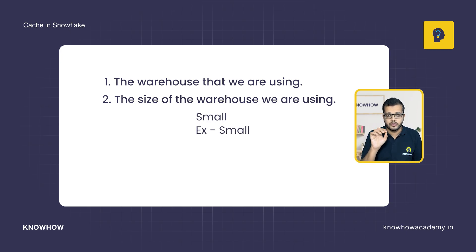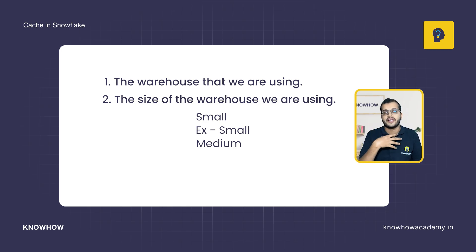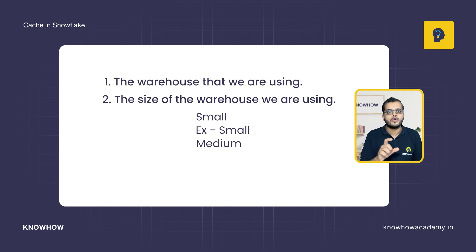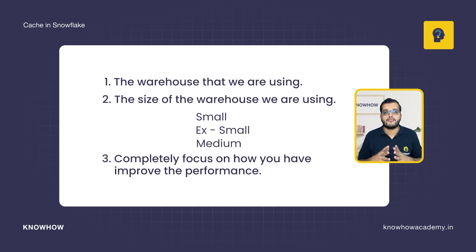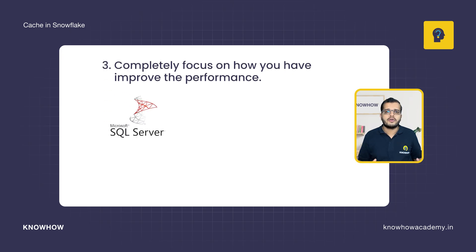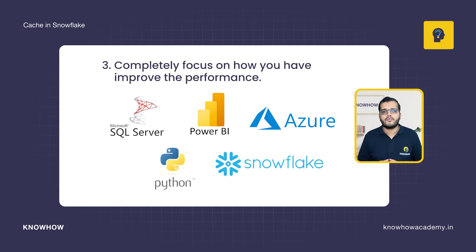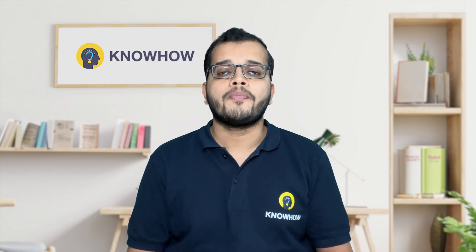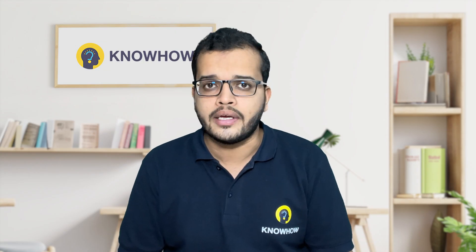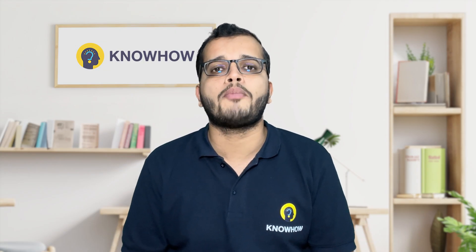Number two, the size of the warehouse — are we using X-Small, Small, Medium, or another size? That should depend on what kind of data and how much usage we need. Number three, we need to completely focus on how to improve performance. Whether you use SQL Server, Power BI, Azure Data Factory, Python, or Snowflake — whichever tool or cloud platform we consider — we should focus on query optimization. Cache is one of the important aspects when trying to improve query performance.